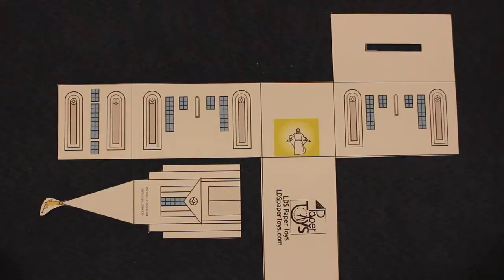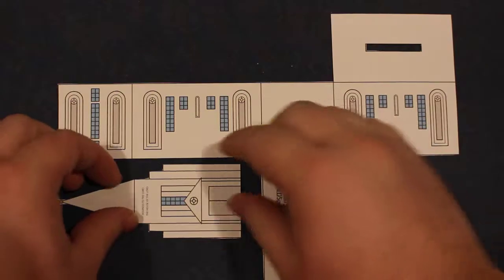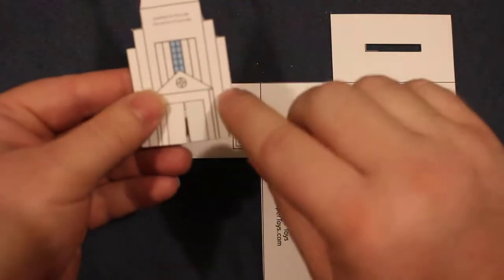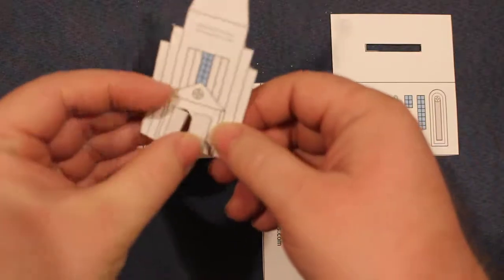So that was the simple version. The complex version, the only difference is when you cut out this rectangle at the same time you're going to use the utility knife and actually cut out these doors. So simply cut along this middle line and the top of the doors and then the doors will actually open.